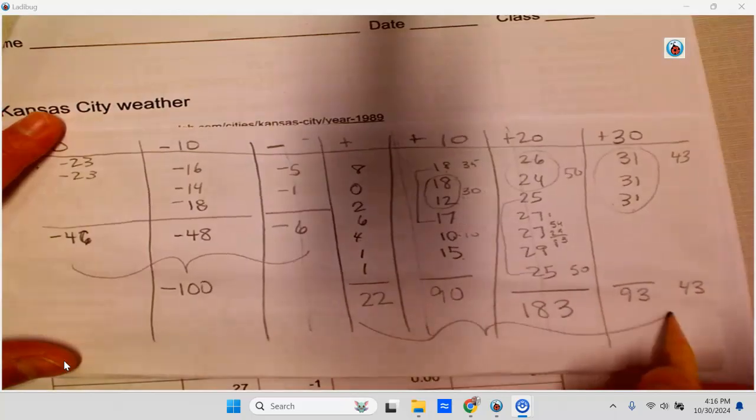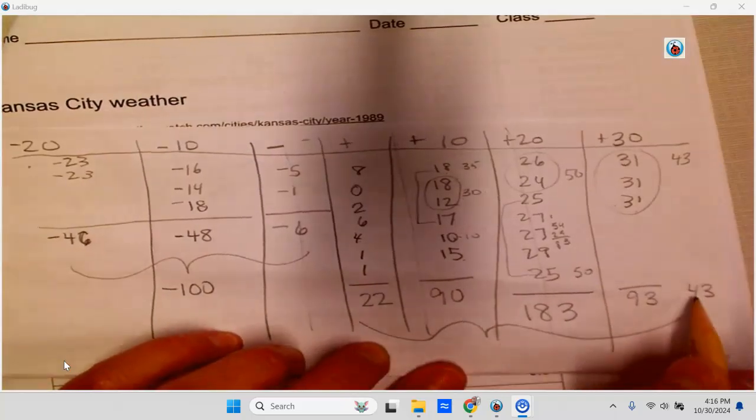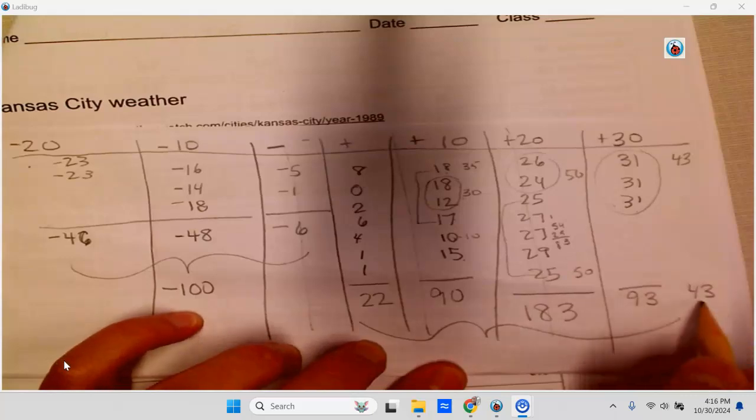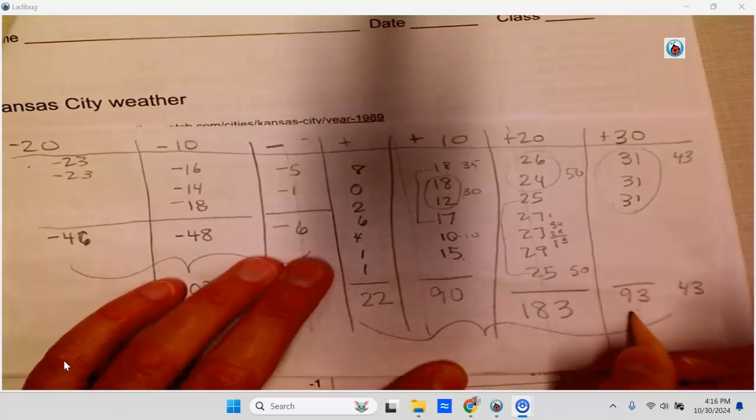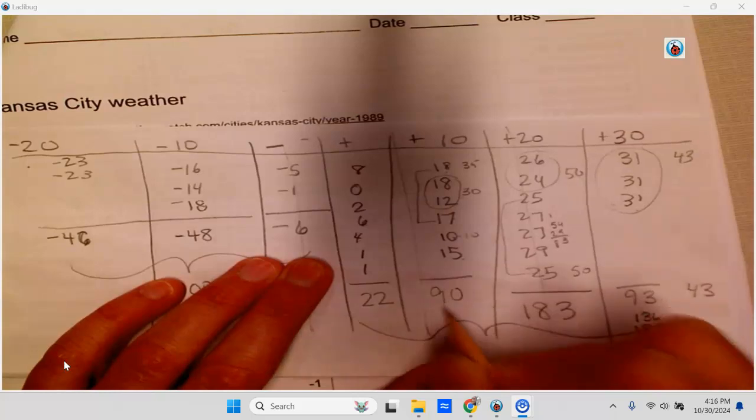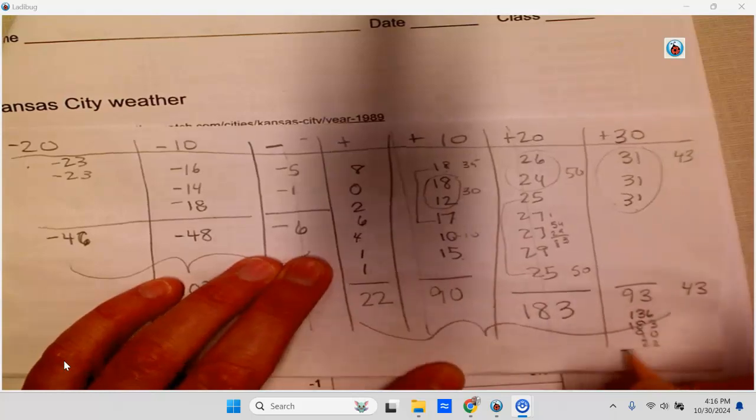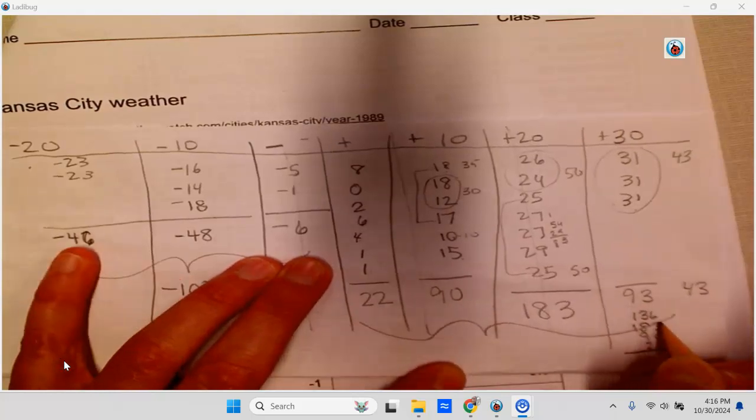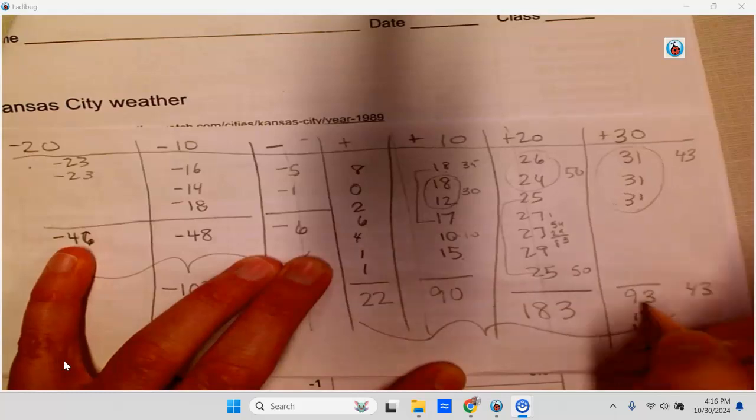And I'm going to add these together. That'll take me a little bit longer. So let's see, I have 136 plus 183 plus 90 plus 22. So then I'm going to add down: 6, 7, 8, 9, 10, 11, carry my 1.